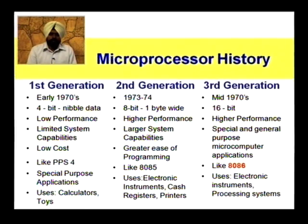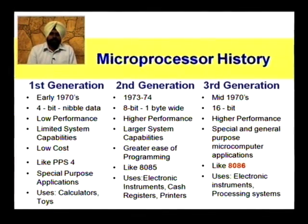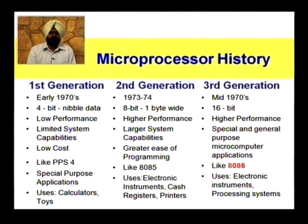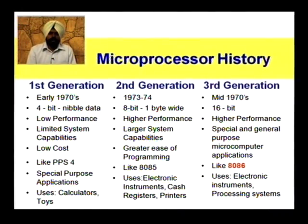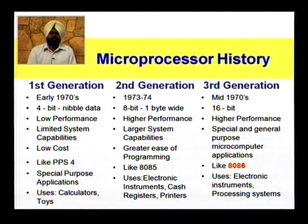A revolution was generated by the introduction of the 8086 microprocessor in the mid and late 1970s. 8086 was introduced in 1978. It is basically a 16-bit microprocessor, and its performance is higher compared to 8-bit microprocessors. It has special and general purpose microcontroller applications and is used in electronic instruments and processing systems.